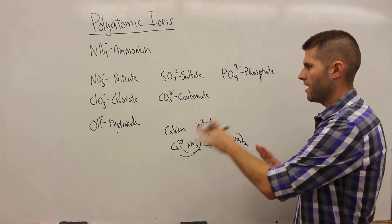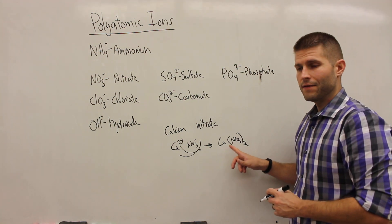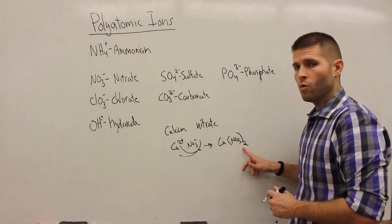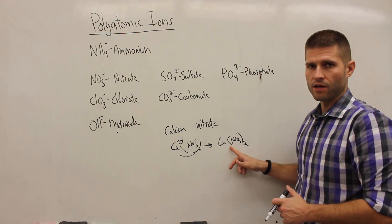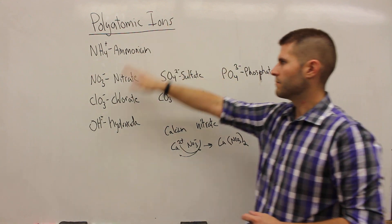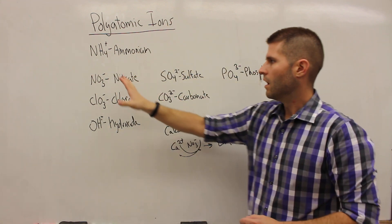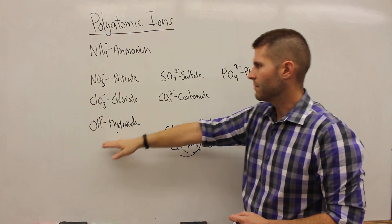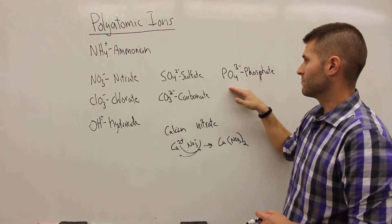So we can see how this is going to work. You only are required to put parentheses if it's a 2 or above as the subscript. A 1 never gets parentheses around the polyatomic ion. So here are our seven polyatomic ions. We have one cation. We have six anions. We have three anions that are minus 1, two anions that are minus 2, one anion that is minus 3.